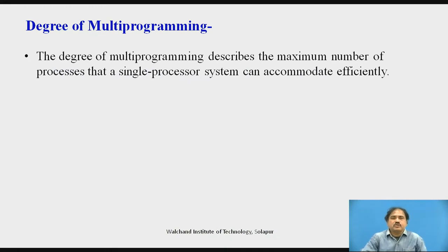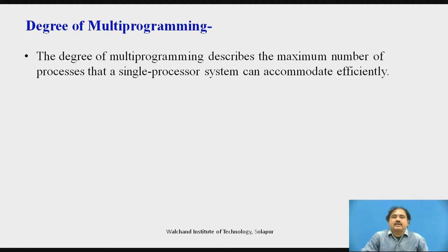First, we focus on a simple term called degree of multi-programming. When we talk about multi-programming, we consider the different processes during execution. The degree of multi-programming describes the maximum number of processes that a single processor can execute quite efficiently. We can accommodate a number of processes for a single processor and execute them effectively.